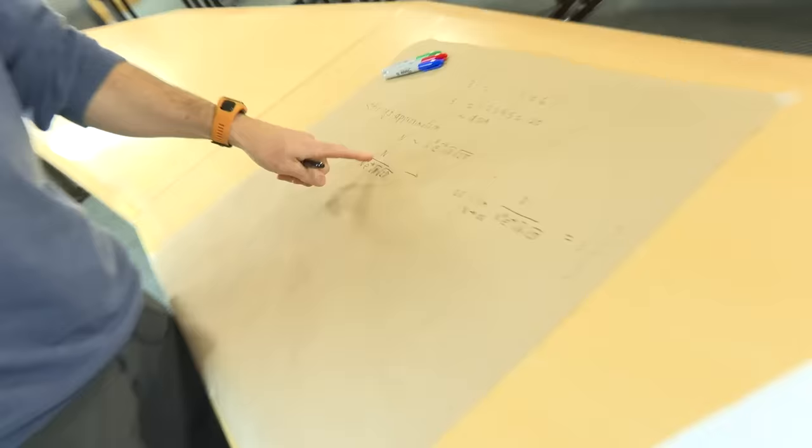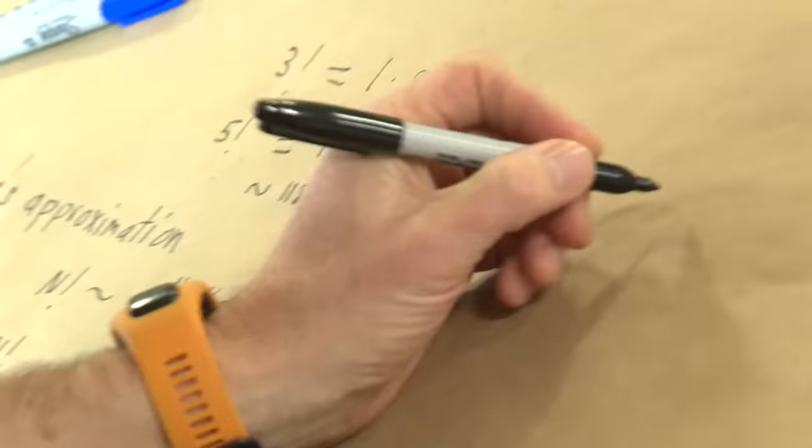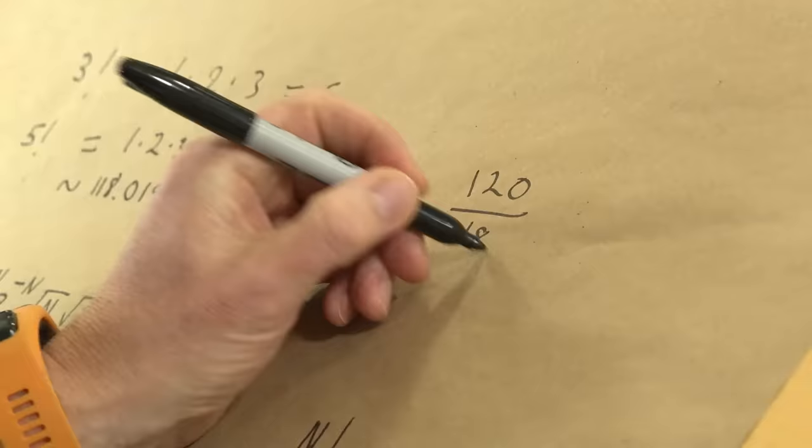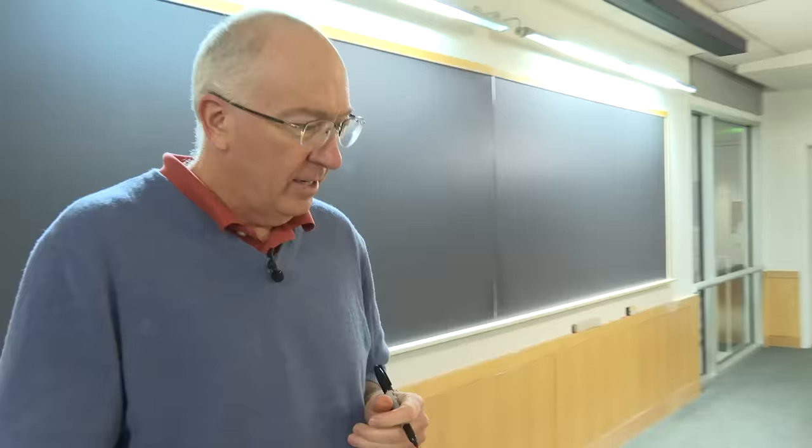But remember that really what I should be checking to check closeness is, does the ratio get close to 1? So if I compute the ratio of 120 over 118.019, and use a calculator offline, that actually is 1.01678. Should we go smaller or bigger? We're going to go bigger. Let's go bigger.